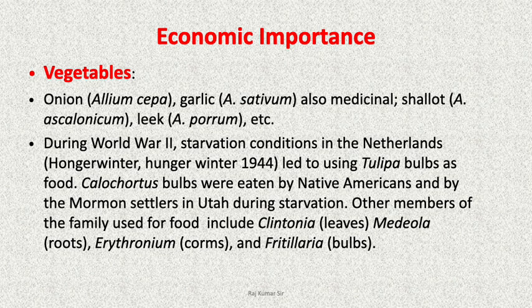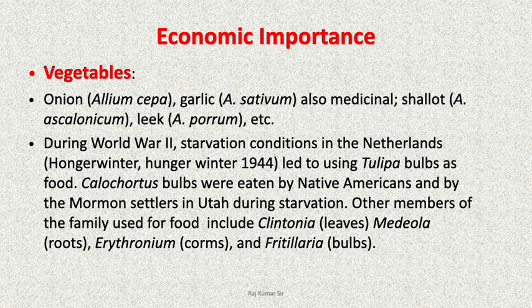With regard to economic importance, the family produces vegetables like onion (Allium cepa); garlic, which also has medicinal importance; shallot (Allium ascalonicum); leek (Allium porrum), etc. During World War II, starvation conditions in the Netherlands led to the use of tulip bulbs as food. Calocortus bulbs were eaten by Native Americans and by the Mormon settlers in Utah during starvation.